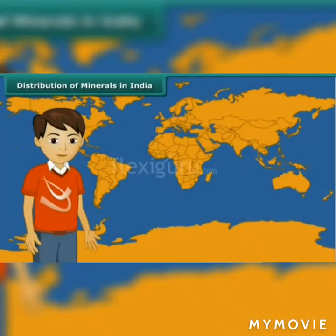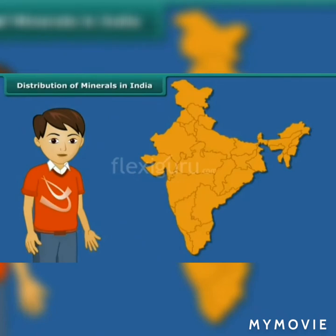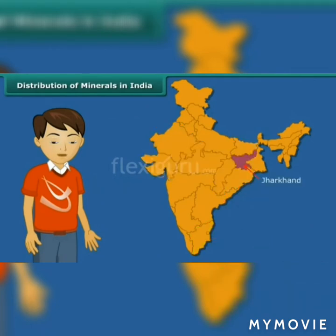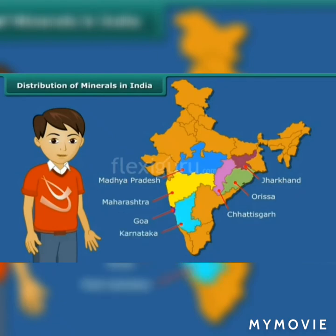Distribution of minerals in India: Look at these maps to study the distribution of minerals in India. India is the largest producer and exporter of mica in the world. Major limestone producing states in India are Bihar, Jharkhand, Odisha, Madhya Pradesh, Chhattisgarh, Rajasthan, Gujarat and Tamil Nadu. Iron ore is found mainly in Jharkhand, Odisha, Chhattisgarh, Madhya Pradesh, Goa, Maharashtra and Karnataka.